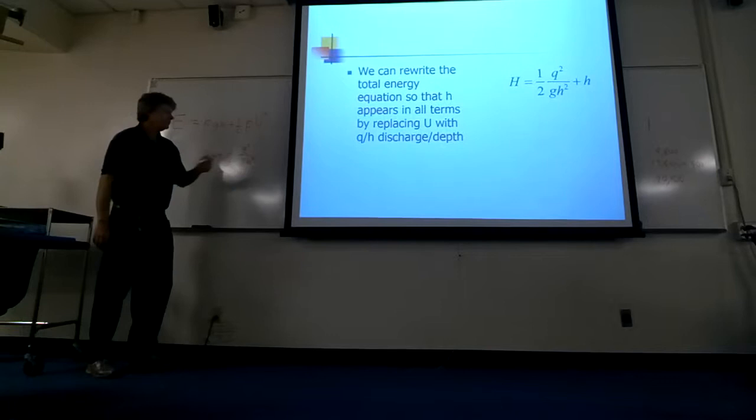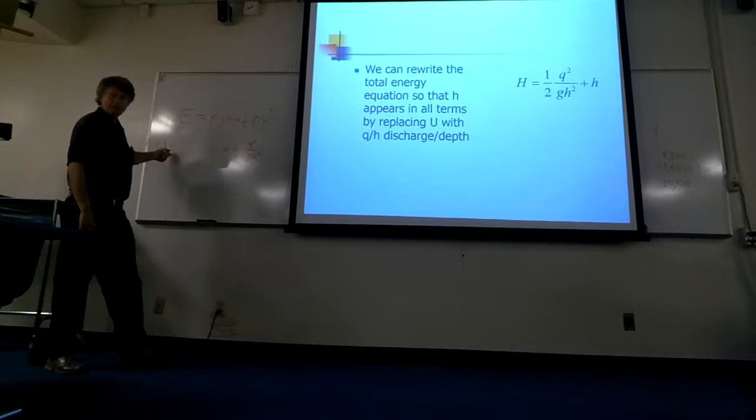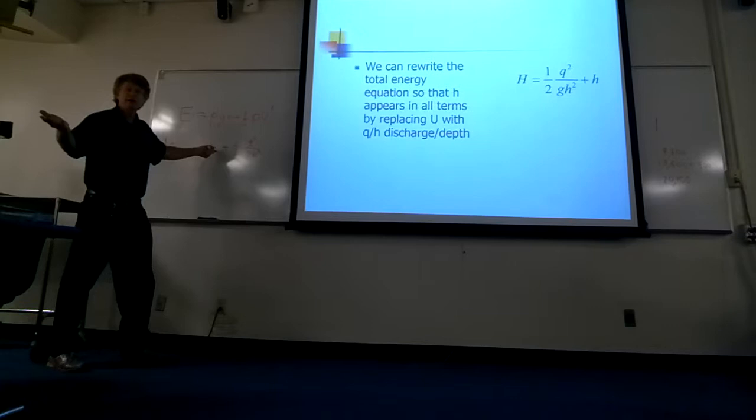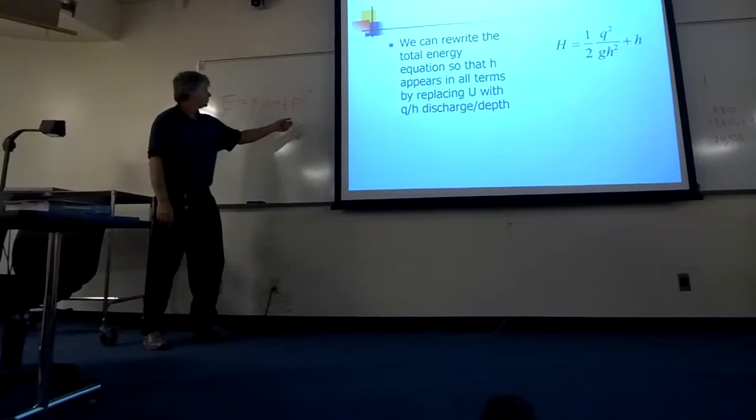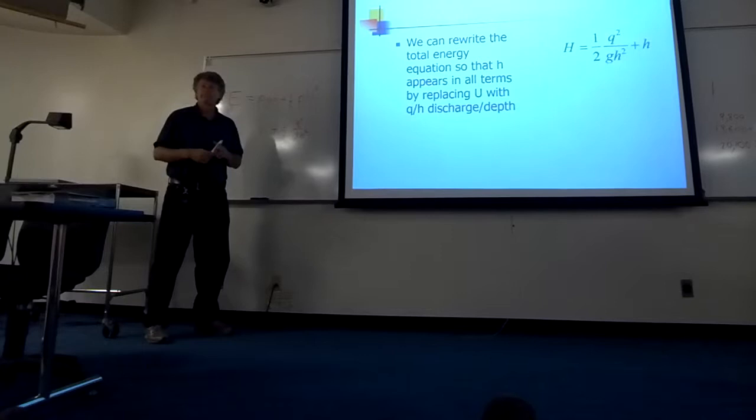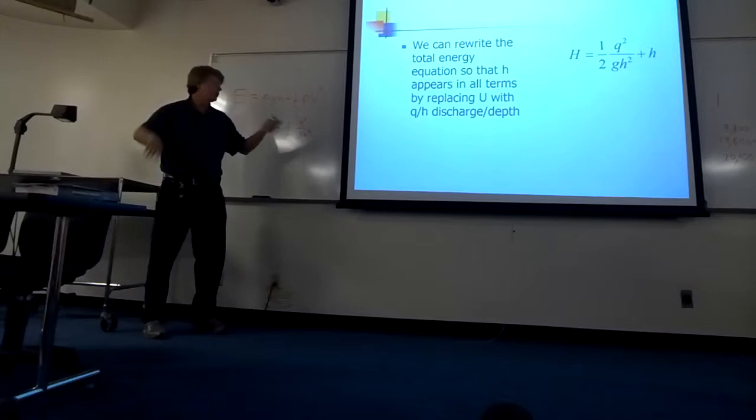So, now, we're representing the stream as, this equation now says that the total energy in the stream is equal to the depth of the stream, makes sense, right? All that potential energy. Plus, the amount of water per unit width going down the stream, squared, divided by depth squared. Notice, this is a quadratic in terms of depth. If we were doing it as an algebra equation, it would be 1 over x squared plus x.